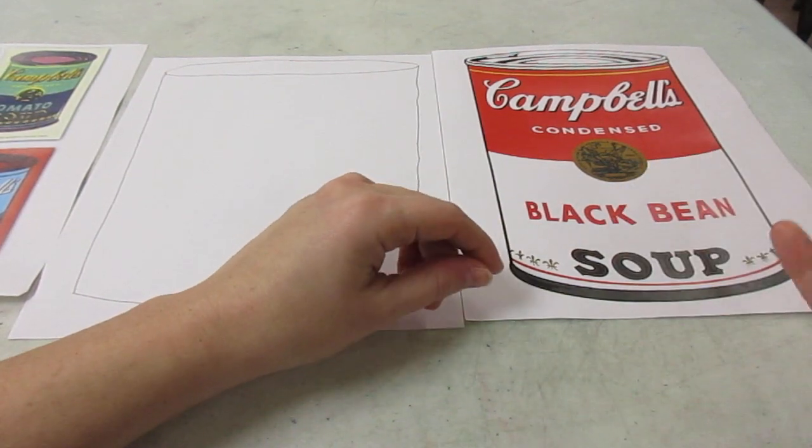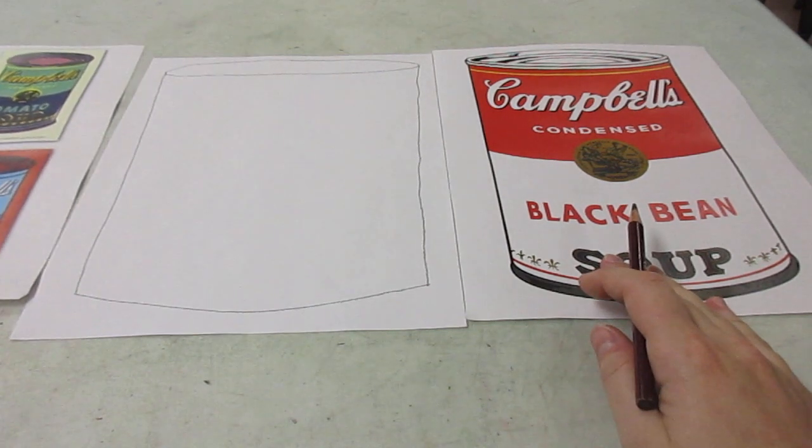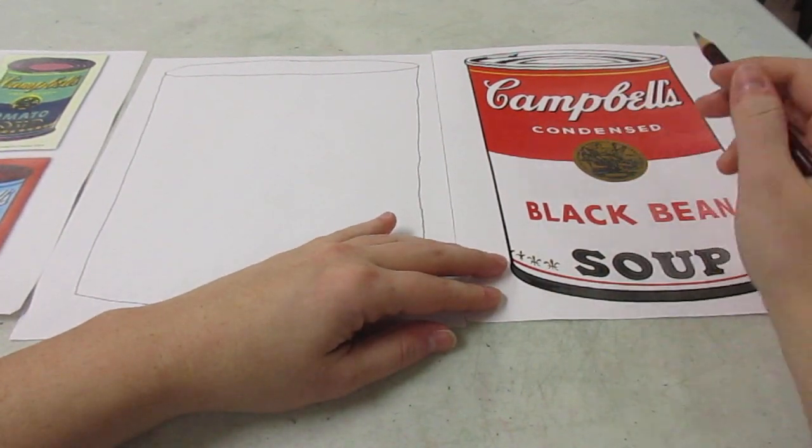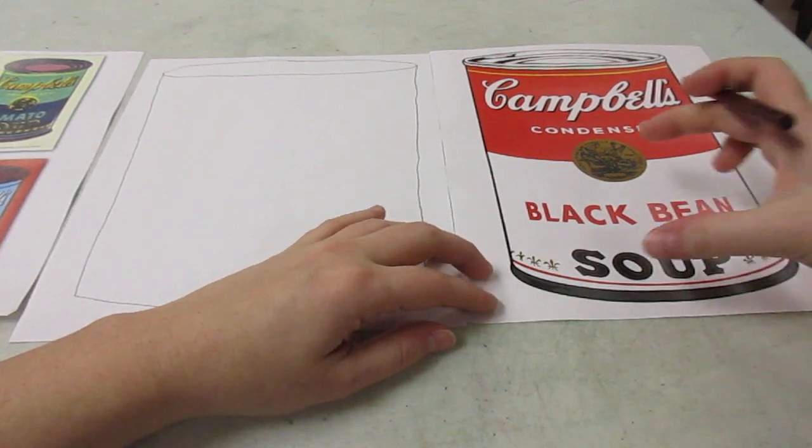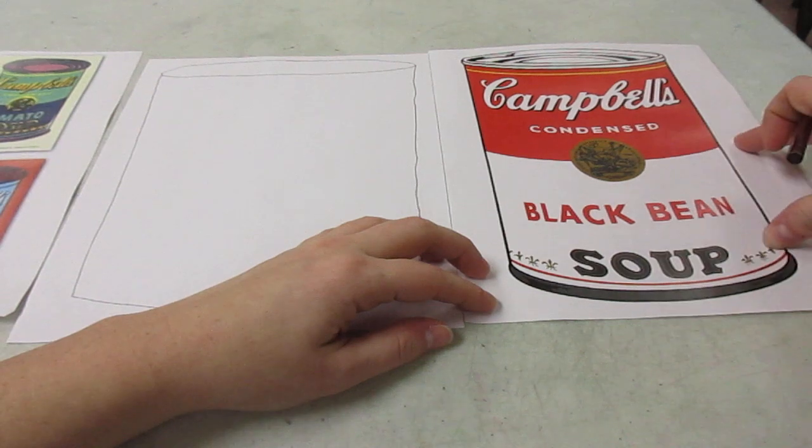Now, there's a lot of different kinds of soup. These ones say tomato. So we can pick what kind of soup, but everyone's gonna do the Campbell's condensed, and then the kind of soup. It has this very recognizable red and white with a little circle.